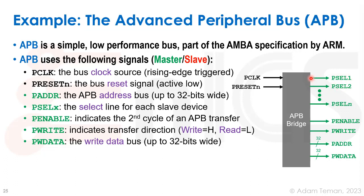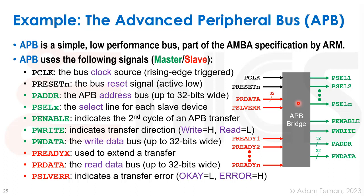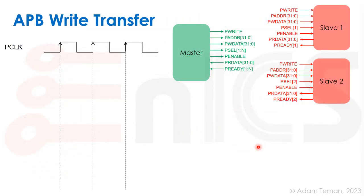In APB, each slave has its own individual PSEL select signal, so one signal is routed to each slave indicating it is selected. PENABLE indicates the second cycle of an APB transfer. On the slave side, returning data to the master, we have PRDATA — a 32-bit read data bus — an error signal, and a PREADY signal which is the ACK, telling us the slave is ready to accept the transfer and used to insert wait states.